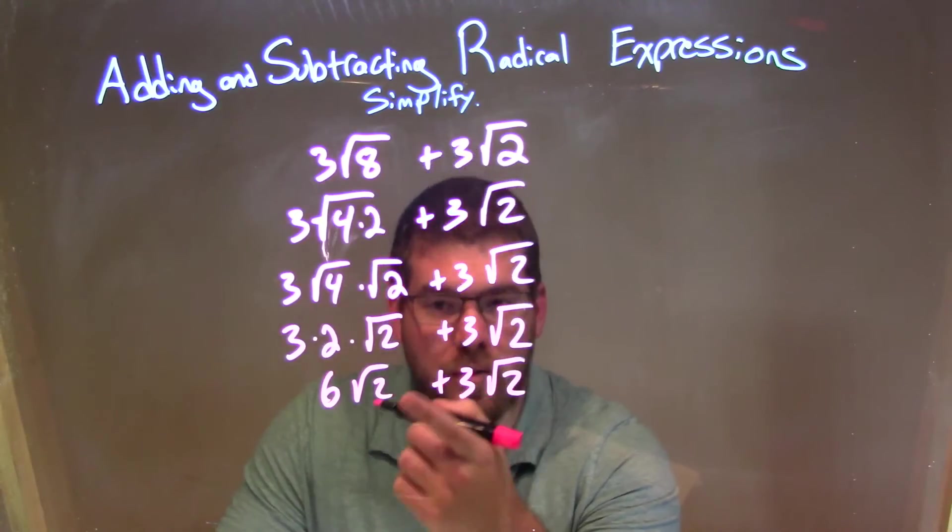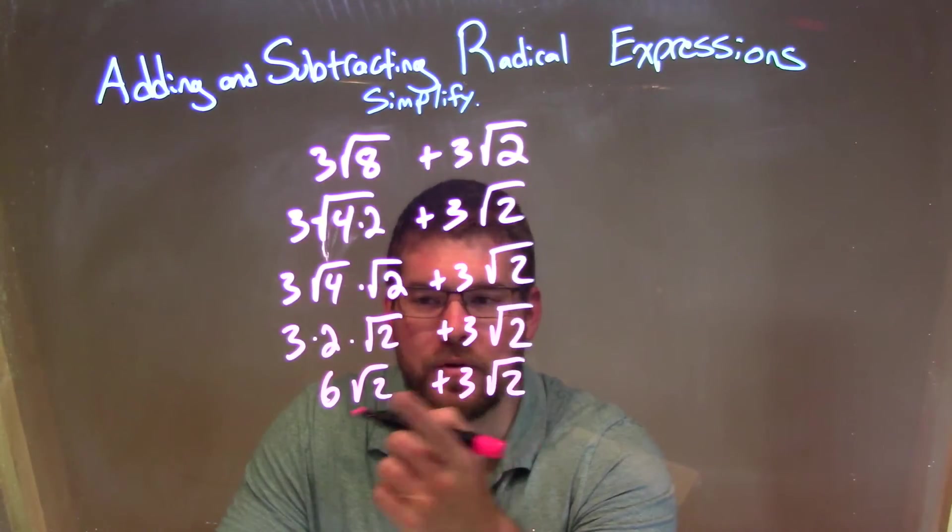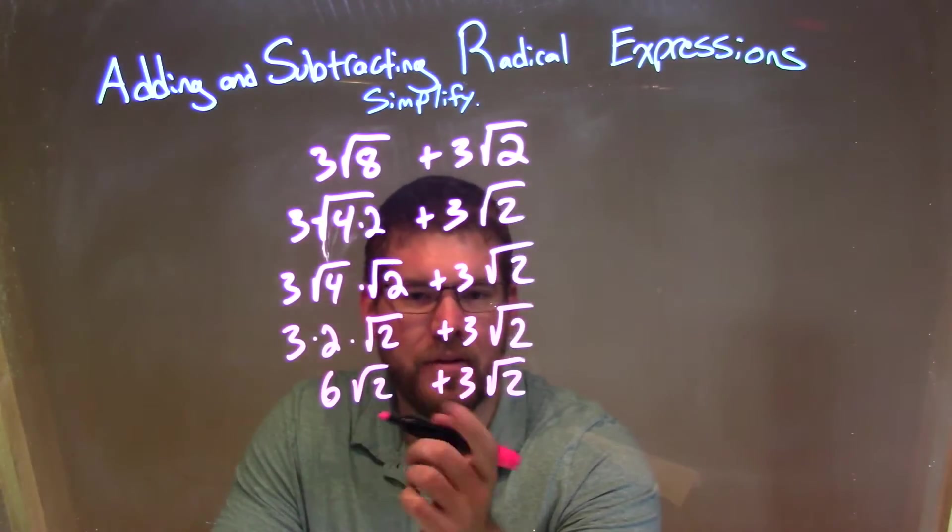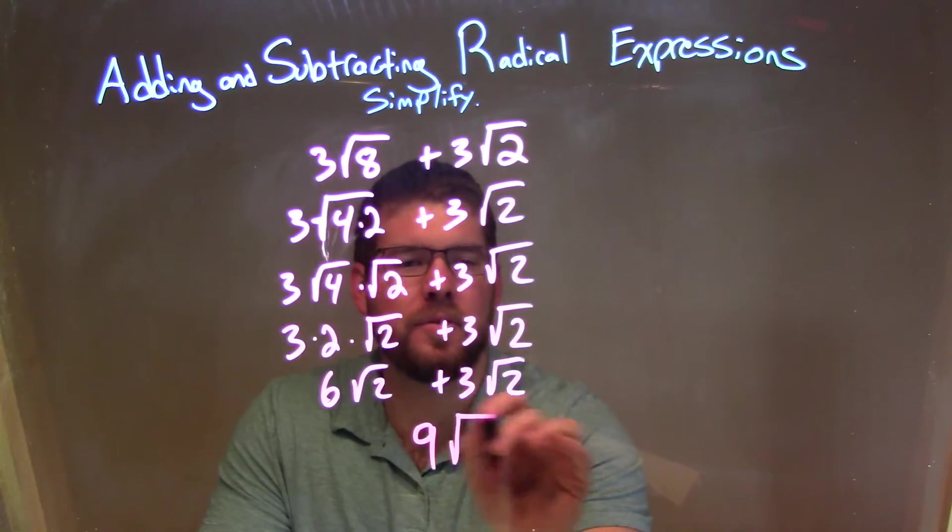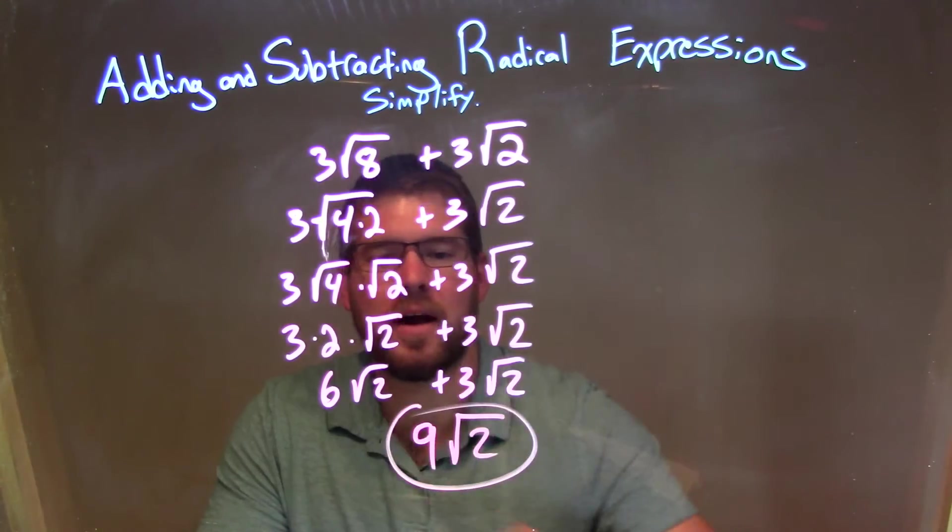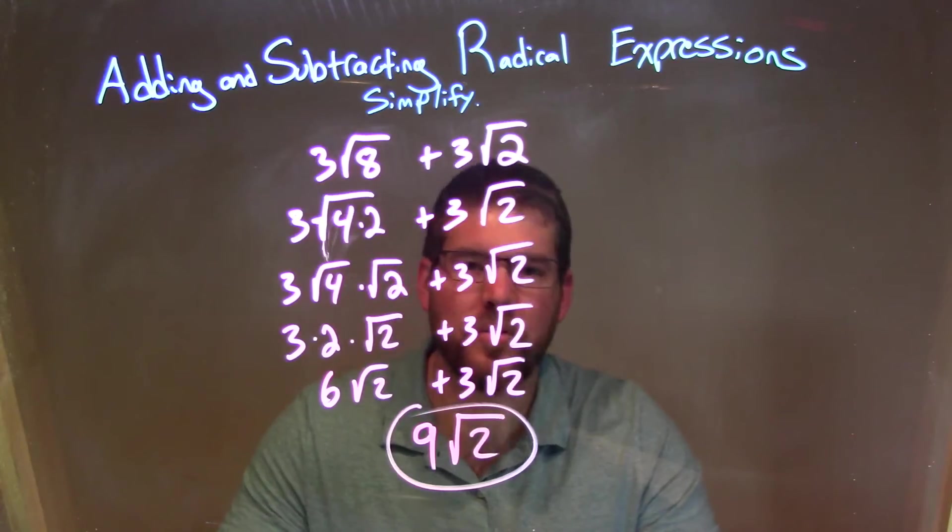And now we have the same square root of 2 for both parts. We have the numbers out in front, so we add those numbers together. It gives us a 9, and we bring down the square root of 2. Our final answer is just 9 times the square root of 2.